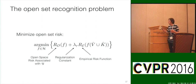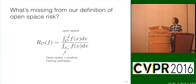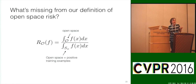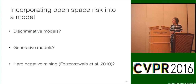So the open set recognition problem then becomes: minimize open space risk plus empirical risk. What's missing from our definition of open space risk is how we define open space — I haven't told you yet how to figure this out from the positive and negative samples we know ahead of time. The definition doesn't tell us how to define O — that's the big question we need to address.